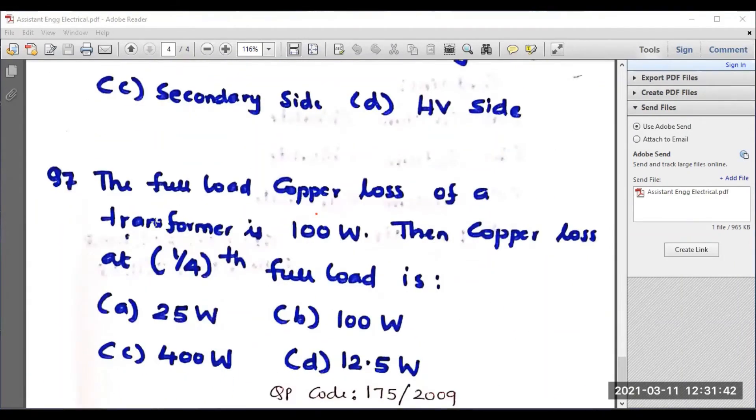Question number seven is also very important. The full load copper loss of a transformer is 100 watts. The copper loss at 1 by 4th full load. The total loss occurring in the transformer we can write as iron loss plus X square into PC, where PC is known as copper loss. I am concentrating the second term for this question. The copper loss is given as 100 watts. The fraction of full load is 1 by 4th. So, X equals 1 by 4. Therefore, 1 by 4 the whole square into PC, which is 100 watts.